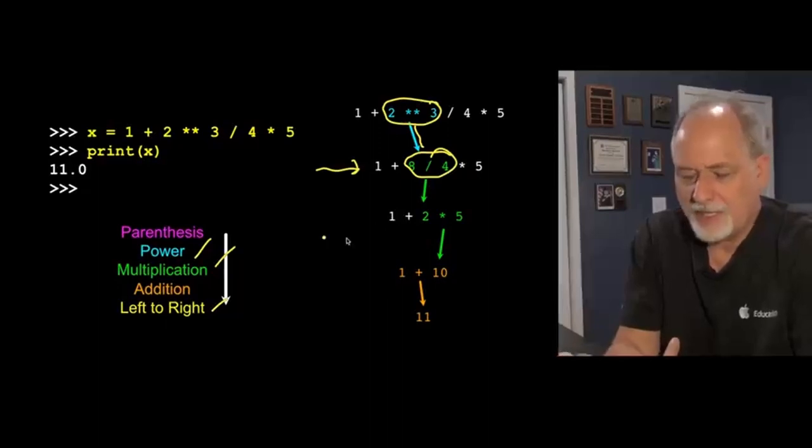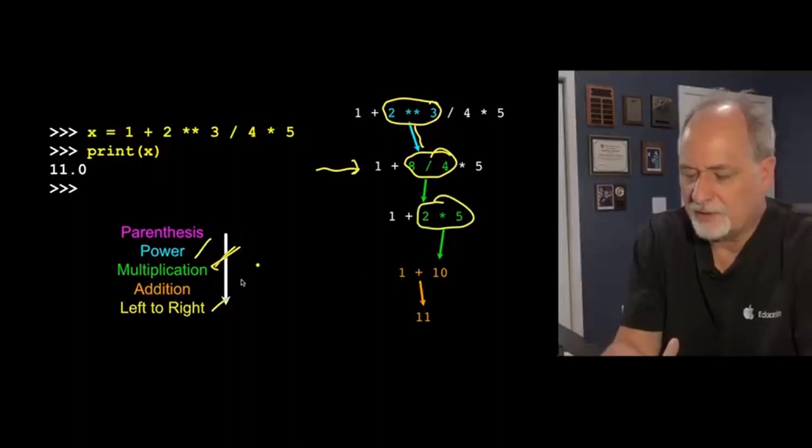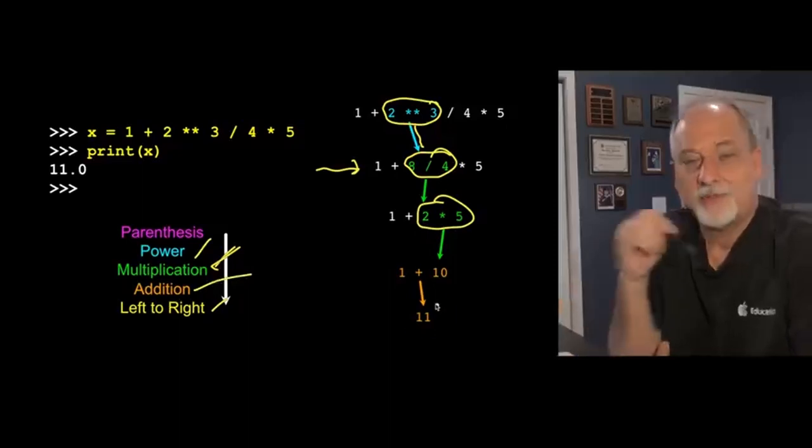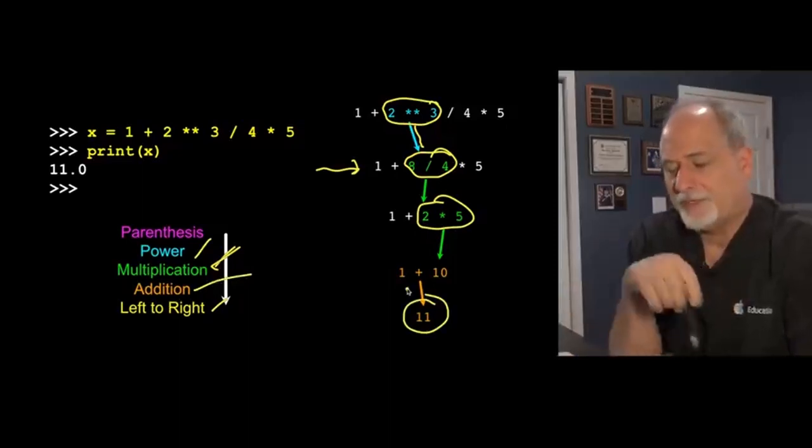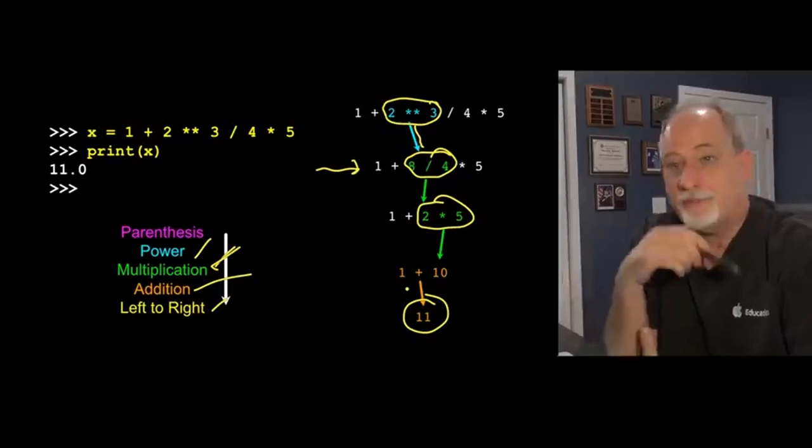Multiplication is the top one, so that does this next, 2 times 5 becomes 10. I rewrite it again, and then 1 plus 10, addition is the lowest thing, and that's how we end up with 11.